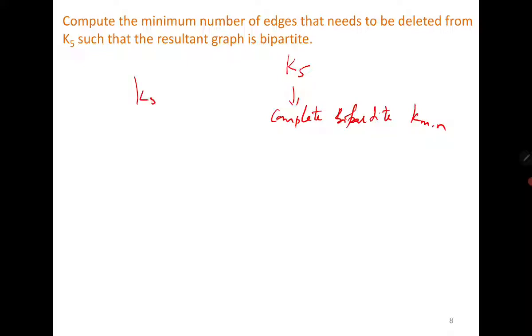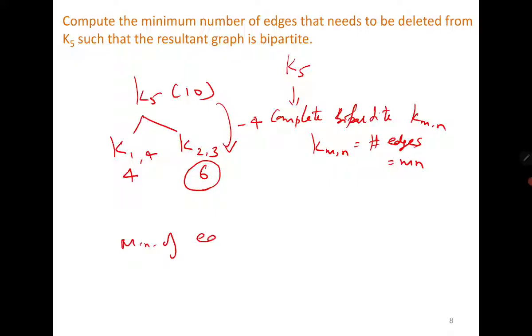From K5 you need to go to complete bipartite graph Kmn. Now there are only two possibilities. From K5 either you can go to K14 or you can go to K23. In Km,n the number of edges is m times n, you can easily verify by yourself. It means in K14 the number of edges are 4 and in K23 the number of edges are 6. While you can count by yourself that in K5 the number of edges are 10. It means that the bipartite graph with the maximum number of edges is K23. It means if you delete 4 edges then you reach to K23. So the minimum number of edges to be deleted is 4.